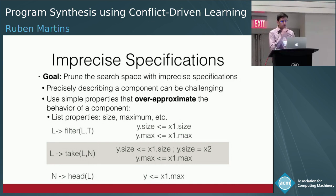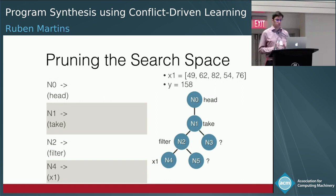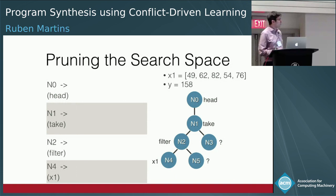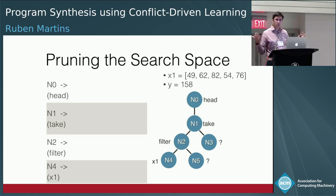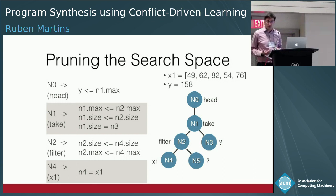How can we use imprecise specifications to prune the search space? Given a partial program for compute-K-sum, I put all imprecise specifications for each node and join them into a constraint system, which I give to a constraint solver to check feasibility.